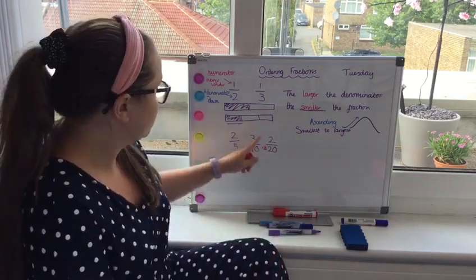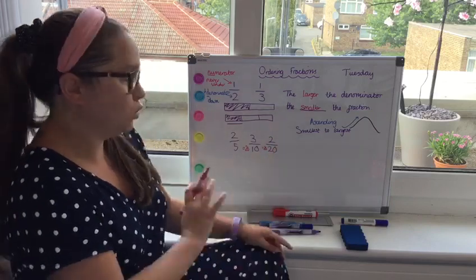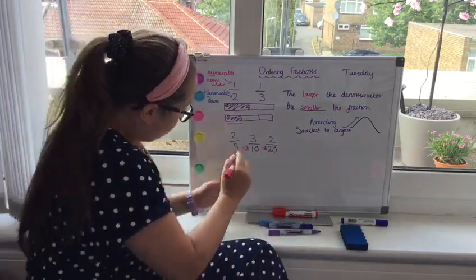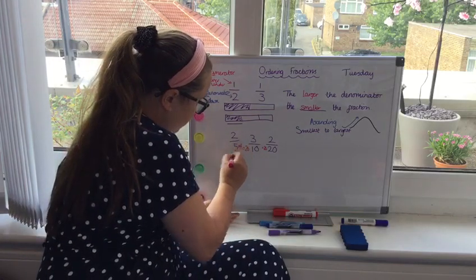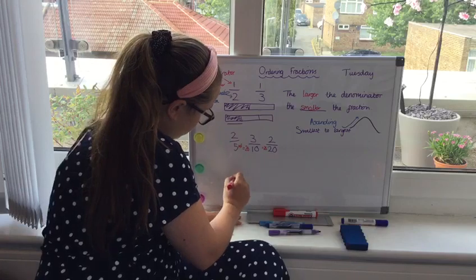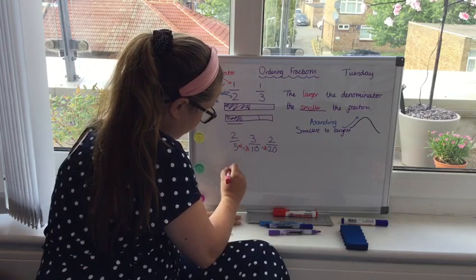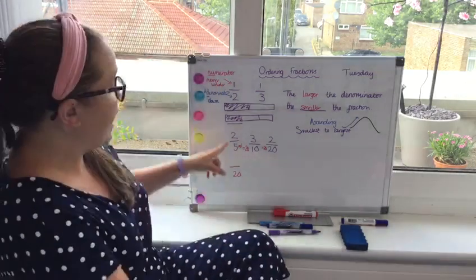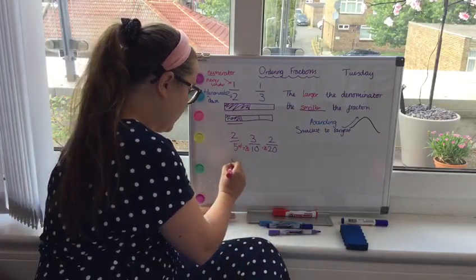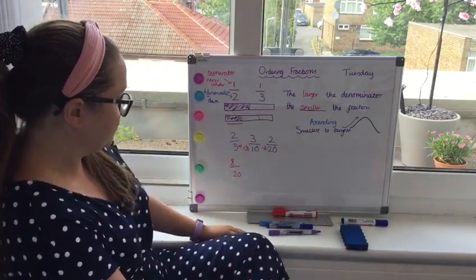So five times four is twenty. OK, so I can do twenty at the bottom. Now, whatever I do to the bottom, I have to do to the top. So two times four is eight. So here we've got eight twentieths.